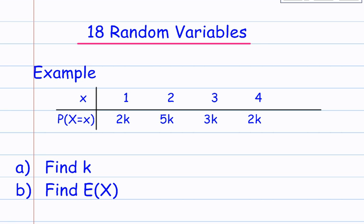So let's do an example. You might be given a table with the counters 1, 2, 3, 4. And they'll give you the probability in forms of the letter K. So the probability P(X = x) is 2K, 5K, 3K, and 2K. Part A says find K, and part B says find the expected value E(X).